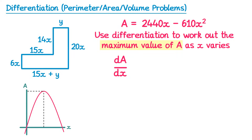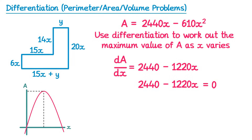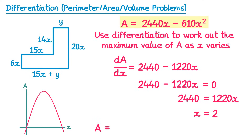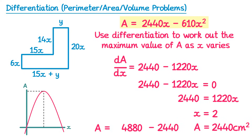So we can now differentiate. If you differentiate 2440x you get 2440. If you differentiate negative 610x squared you do 2 times negative 610 which is negative 1220 and then reduce the power down from x squared to x. Now if this is the maximum point, the gradient is zero so we set this equal to zero. Rearranging by adding 1220x to both sides gives 2440 equals 1220x, then divide both sides by 1220 and you get x equals 2. So we substitute x = 2 into the area formula: A equals 2440 times 2 take away 610 times 2 squared, giving 4880 take away 2440, which is 2440cm squared.